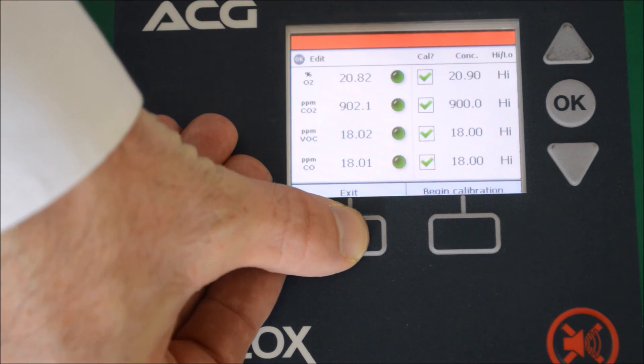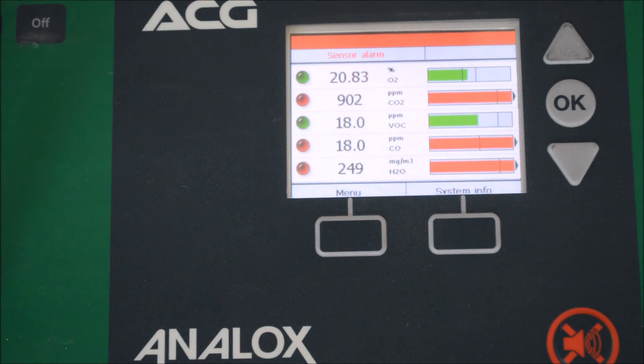To exit that menu, we now just press exit, and we'll go back to the main screens, and remove the calibration gas, and turn the unit to the off position.